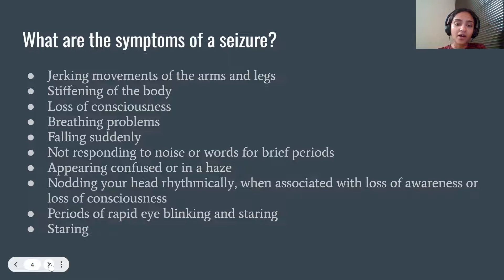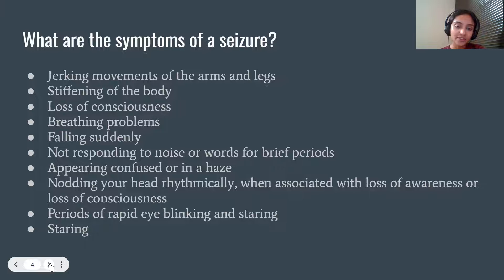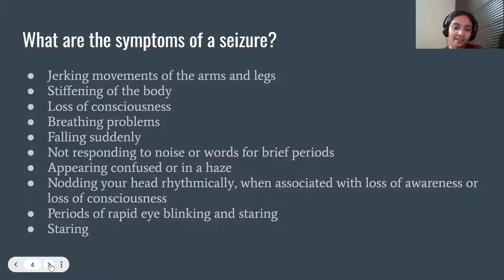Which symptoms are caused by a seizure? As you can see from this list, there are various symptoms that can be caused by someone having a seizure, and this is not an exhaustive list — there are many more symptoms that might not be listed here. These include: jerking movements of the arms and legs, stiffening of the body, loss of consciousness, breathing problems, falling suddenly, not responding to noise or words for brief periods, appearing confused or in a haze, and periods of rapid eye blinking and staring.